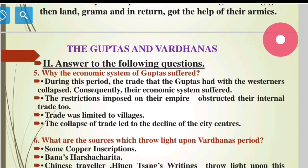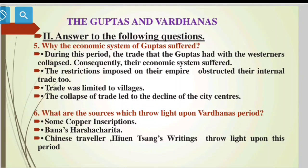Why did the economic system of the Guptas suffer? During the Gupta period, the trade that the Guptas had with the Westerners collapsed. Consequently, their economic system suffered. The restrictions imposed on their empire also obstructed their internal trade. Trade was limited to villages.